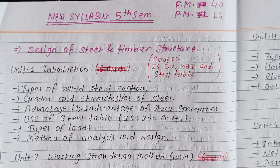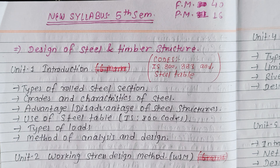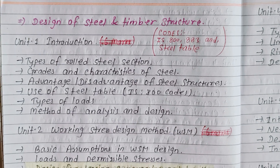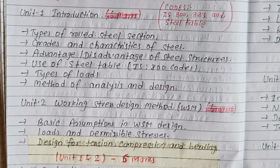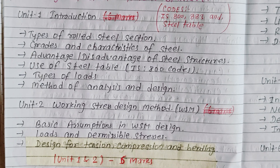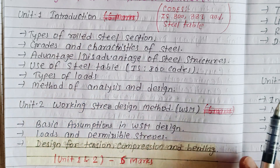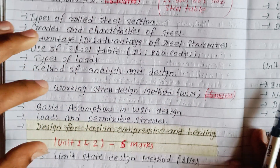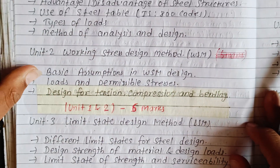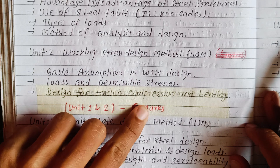The subject has long questions covering steel and timber sections. The full marks are 40, with 16 marks for the first portion. Introduction and the Working Stress Method are covered in Units 1 and 2, which carry a total of 6 marks each.